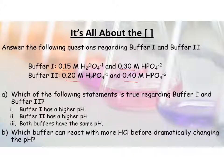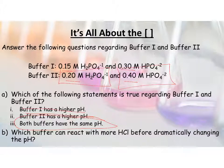Okay, so buffer 1 and buffer 2 have the same pH. But because buffer 2 has higher concentrations of the acid and the conjugate base, it is going to be better able to counteract more HCl before the pH is going to dramatically change.